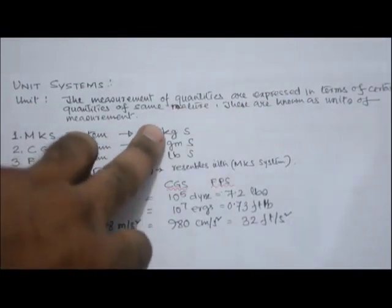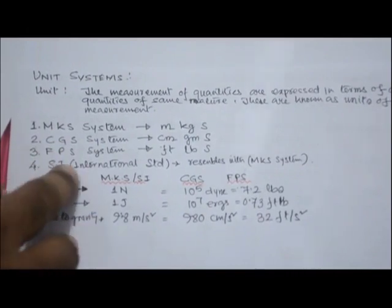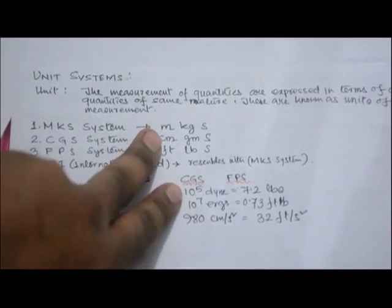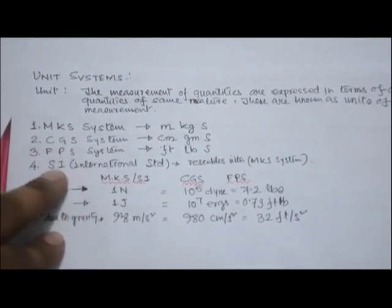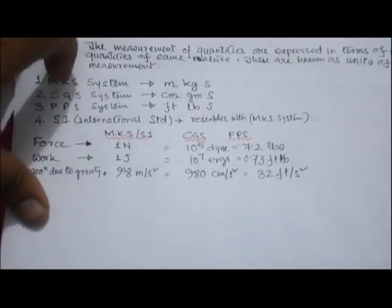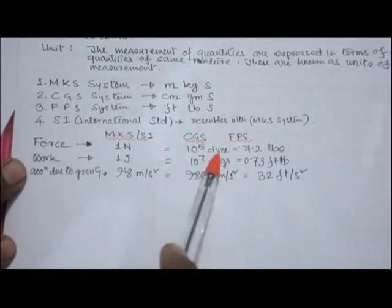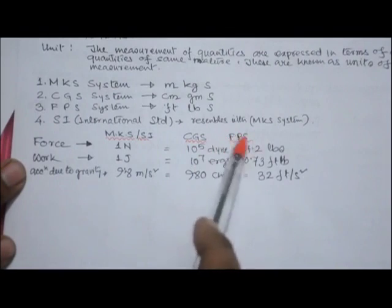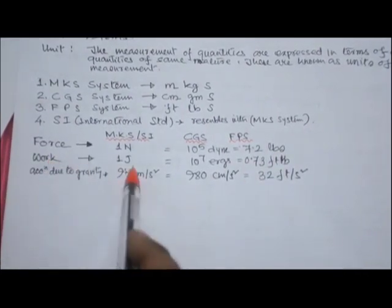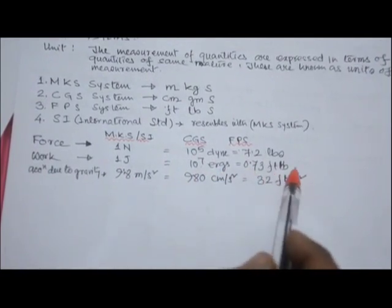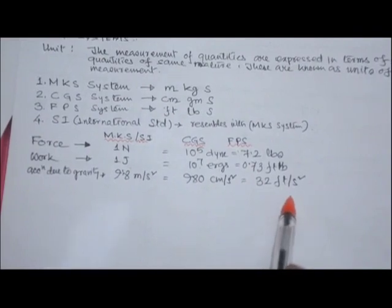Unit systems: MKS (meter, kilogram, second), CGS (centimeter, gram, second), FPS (foot, pound, second) — the British system — and SI (International Standard), which resembles the MKS system. For force: 1 newton (MKS/SI) = 10⁵ dyne (CGS) = 7.2 poundals (FPS). For work: 1 joule = 10⁷ ergs = 0.73 foot-poundal. Acceleration due to gravity: 9.8 m/s², 980 cm/s², or 32 ft/s².